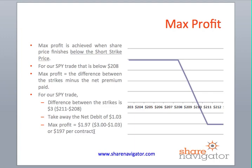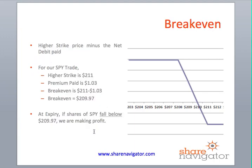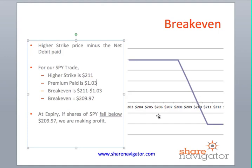The break-even point is the higher strike price minus the net debit paid. Our higher strike was $211, and we paid $1.03, so the break-even is $211 minus $1.03, which equals $209.97. Once the share price falls below $209.97 at expiry, we begin making some type of profit.